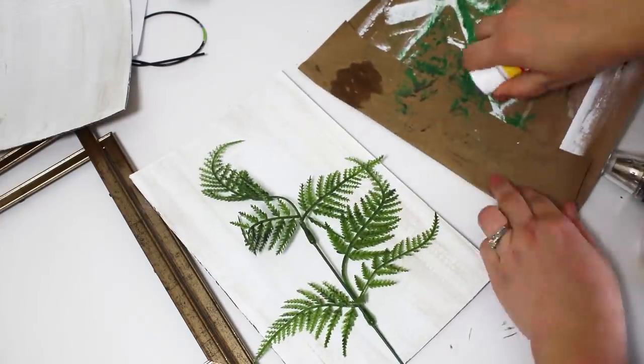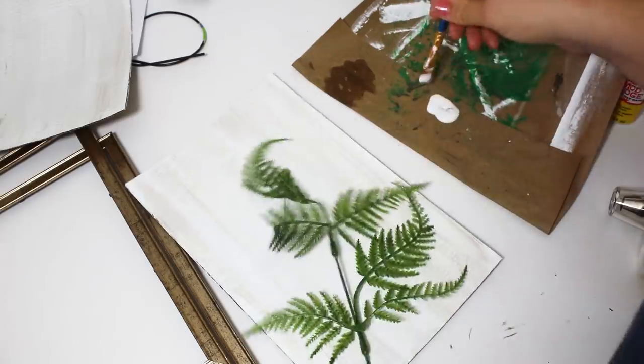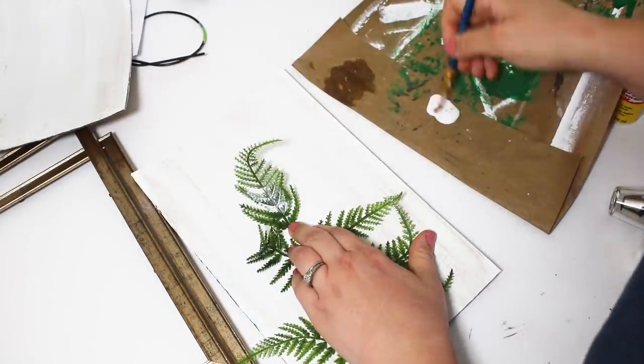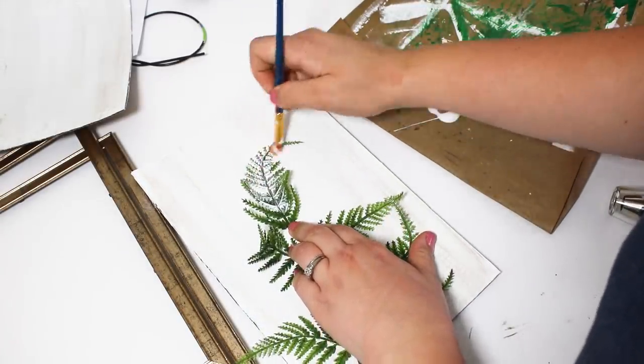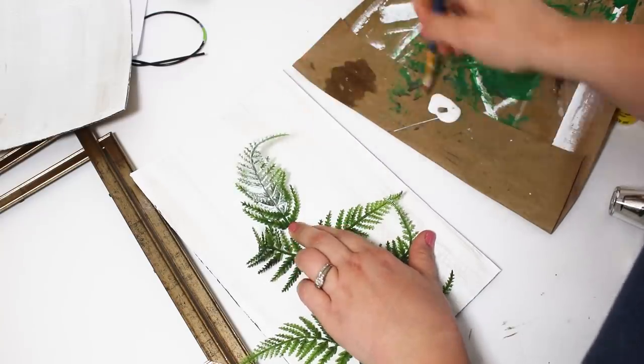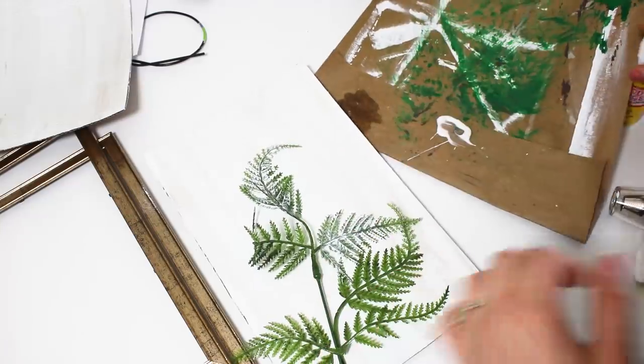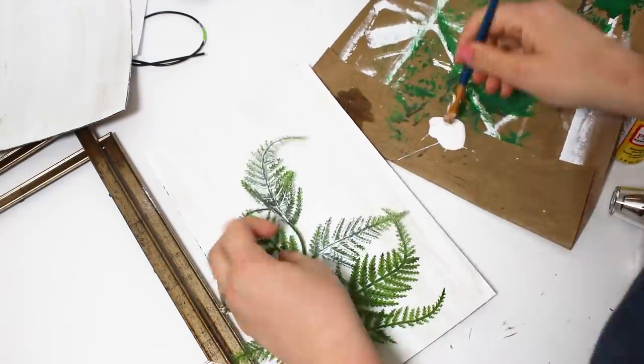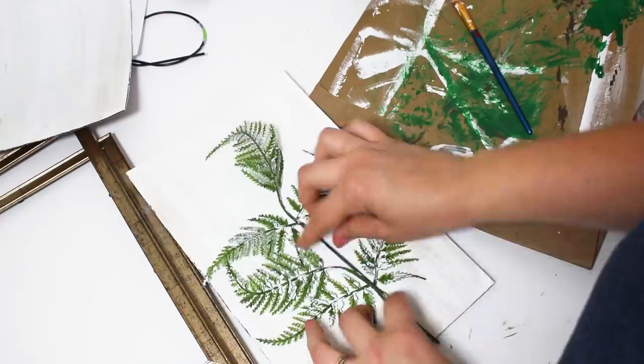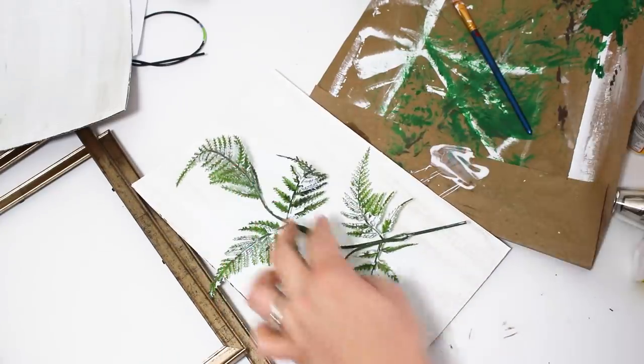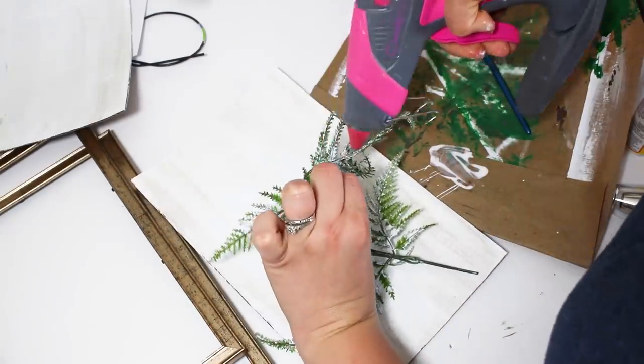So the next thing I'm going to do is try to attach this greenery to the sign. It has a lot of little leaves on it and little pieces hanging off, so it does want to curl up. So I thought it would be best to kind of mod podge the entire thing down. But this is a heavier piece just to attach with mod podge. So I did end up tacking it in a few places here and there with my hot glue.